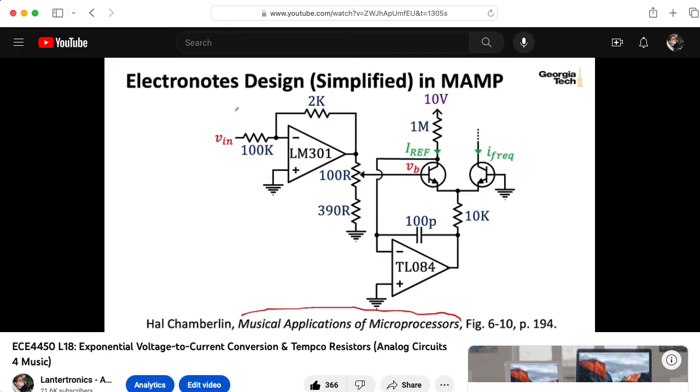I have a lecture in my ECE 4450 Analog Circuits for Music Synthesis class that talks about different techniques to deal with the temperature variation in the Ebers-Moll equation to create exponential voltage-to-current sources to drive things like voltage-controlled oscillators. Well, in this context, it's really a current-controlled oscillator and technically current-controlled filters. But you hook something like this to them to make them voltage-controlled filters.